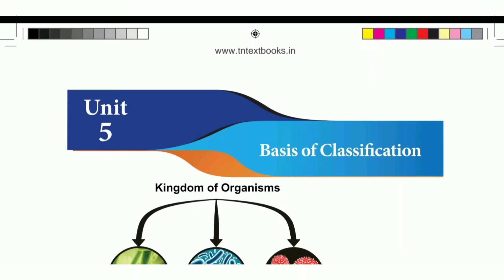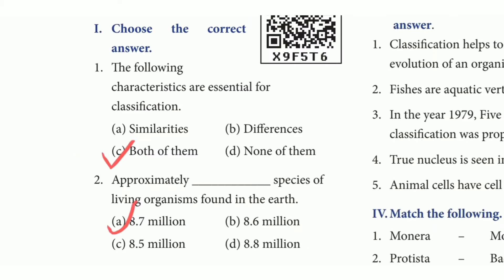We will now look at Unit 5 of 7th Standard Science. Choose the correct answer. First question: the following characteristics are essential for classification. The answer is option C, both of them.